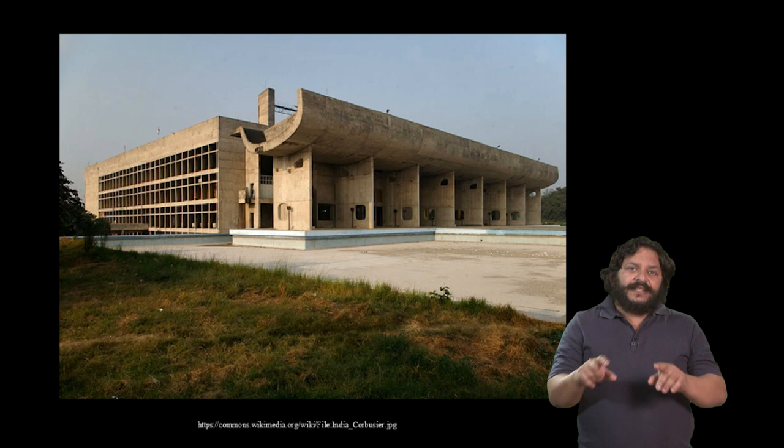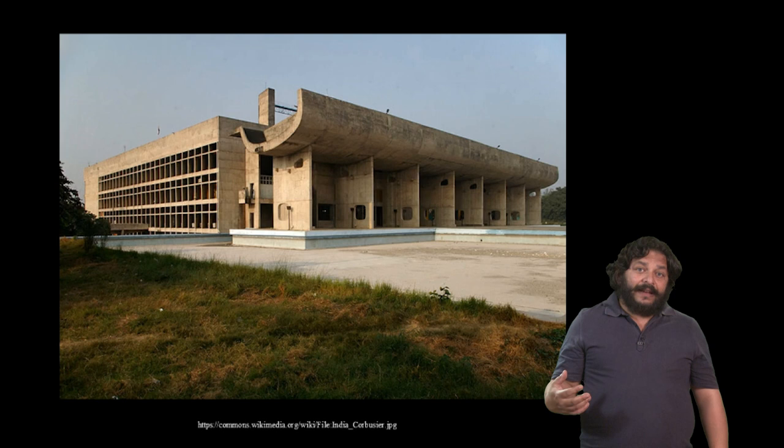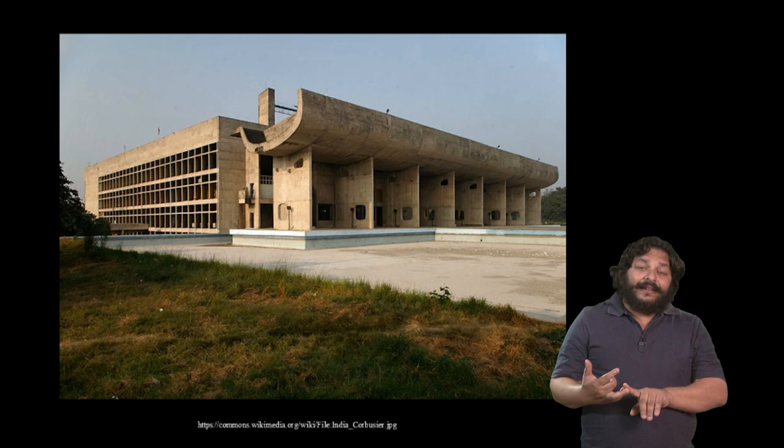Chandigarh was laid out along a grid plan and a number of important buildings were designed by Corbusier himself. All the forms in these buildings are either functional, and if they are ornamental, it is an ornament that does not necessarily reference anything from an architectural history of the past.